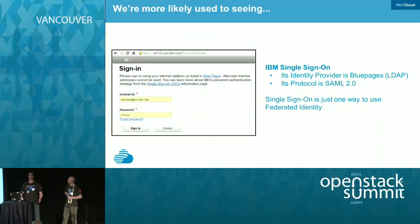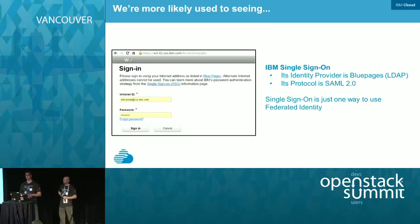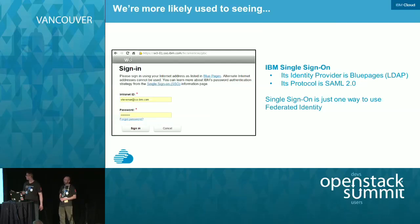What we're probably used to associating with federated identity is a corporate login screen — like what you see on the IBM intranet when booking travel. That's just one instance of federated identity: a browser-based single sign-on. The identity provider in that case is BluePages, which is IBM's corporate LDAP, and the protocol is SAML 2.0. But single sign-on is just one way to use federation and federated identity.